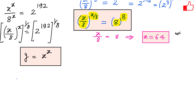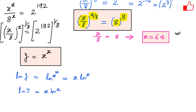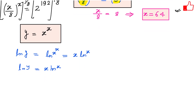Let us check what kind of graph this function has and whether two roots are possible. Taking the natural log of both sides: ln y equals ln of x raised to the power x, which by log rules gives ln y equals x ln x. Now let us find dy over dx by differentiating both sides.